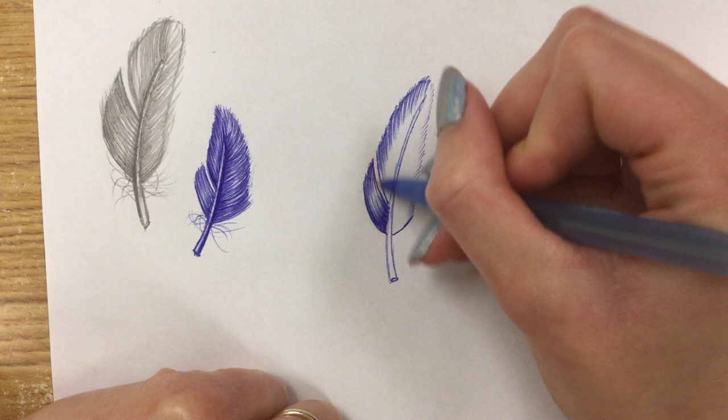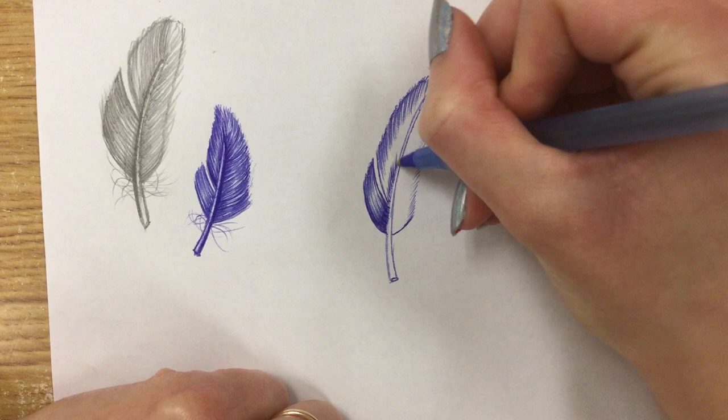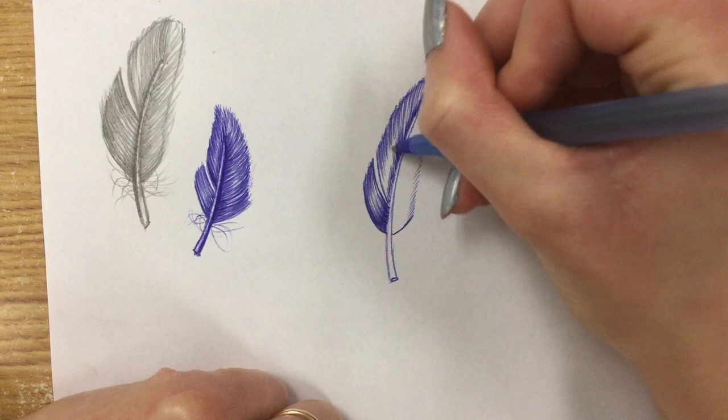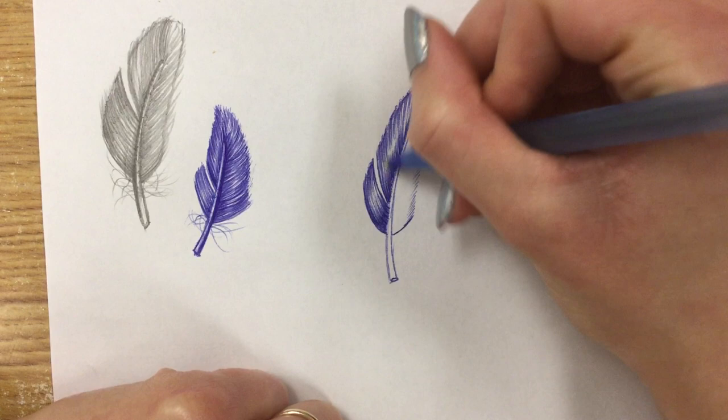And that will make my feather really come to life on the page. So I will add some pen strokes from the inside. I'll make them nice and dark. I'm curving my pen ever so slightly while I do them to make this feather look curved and a little bit more real.